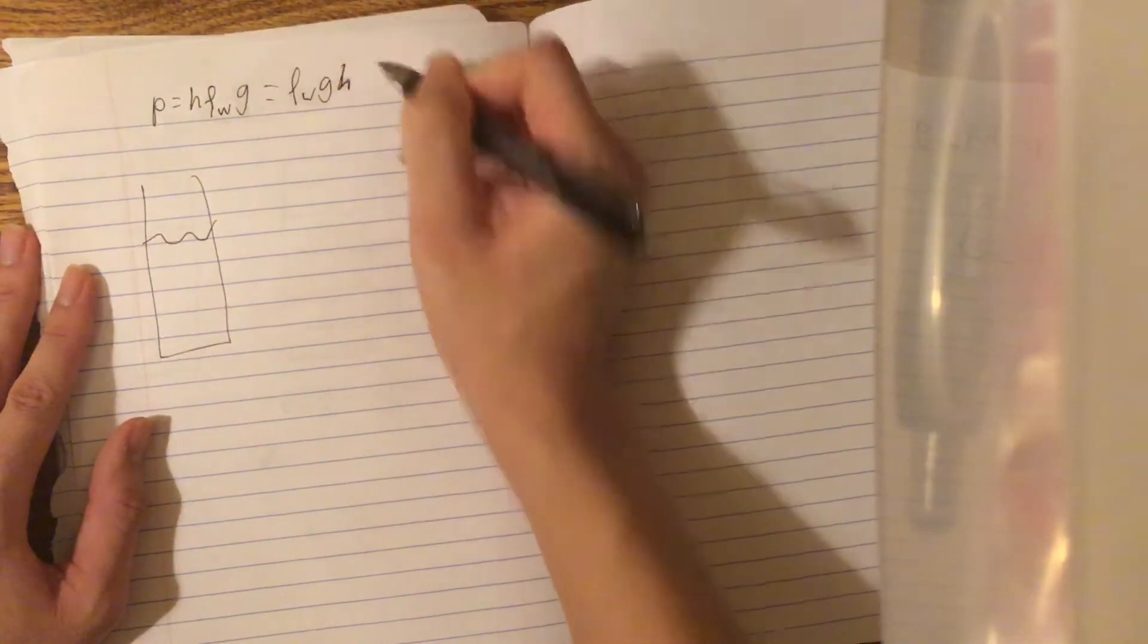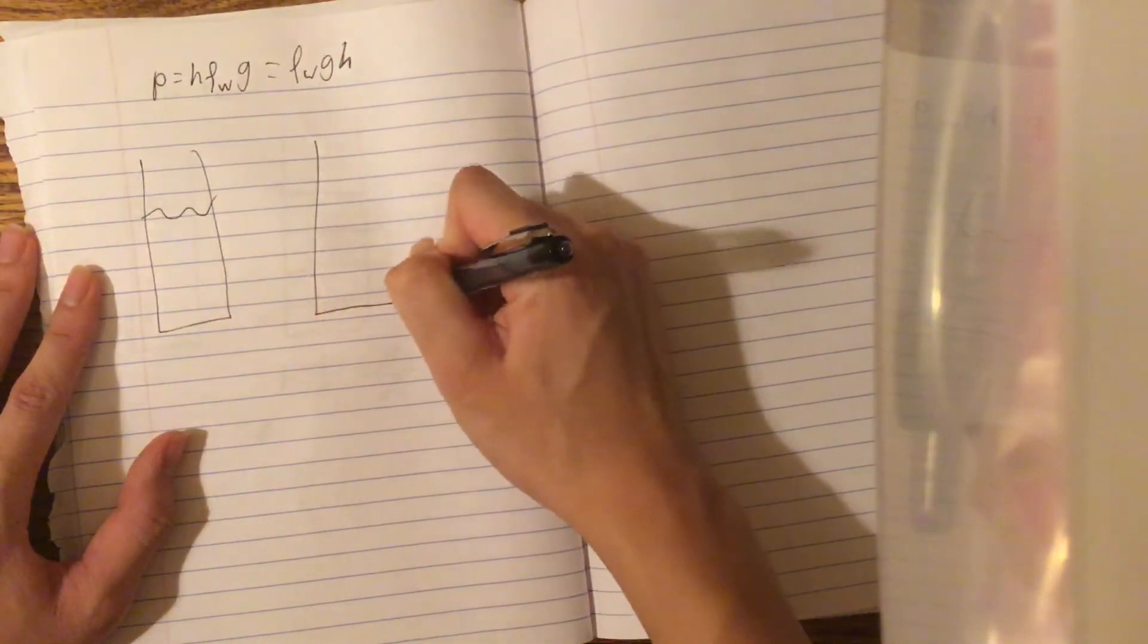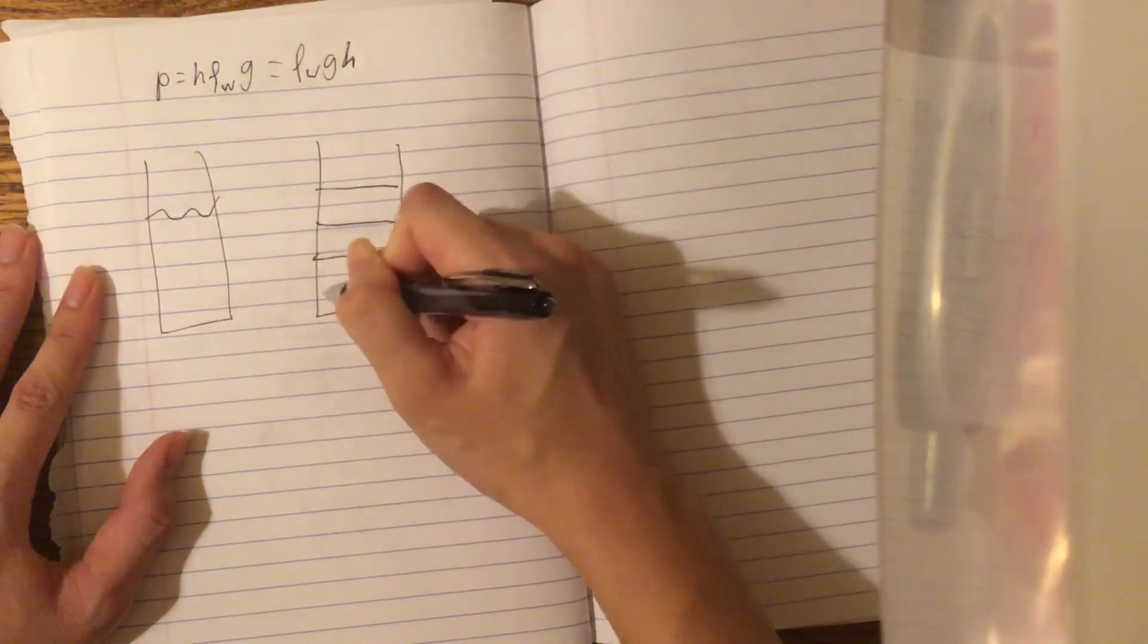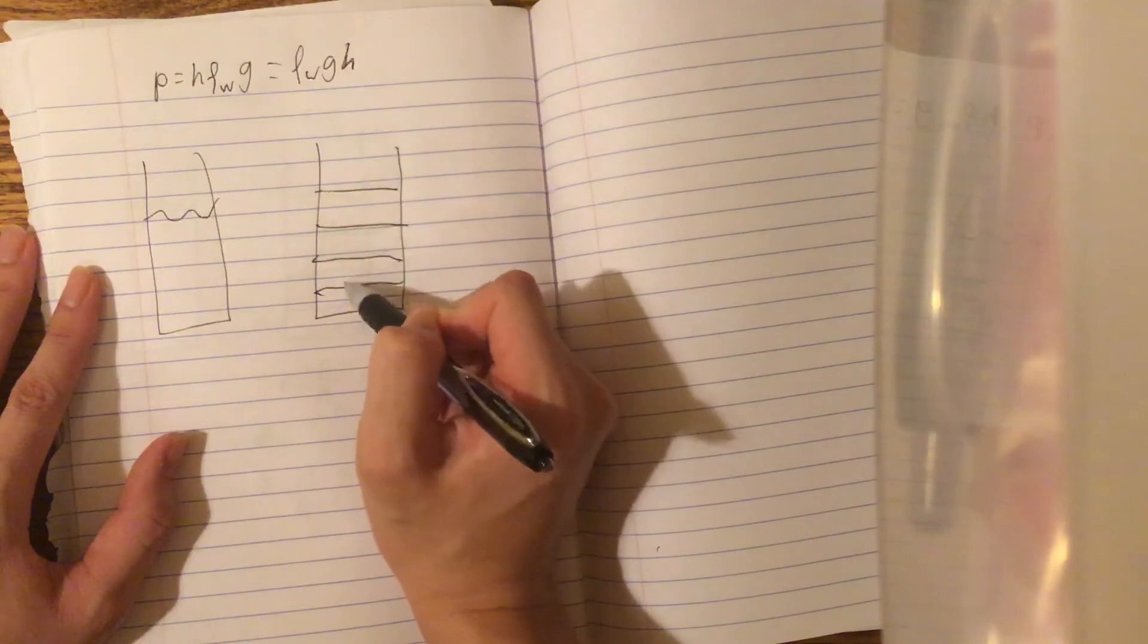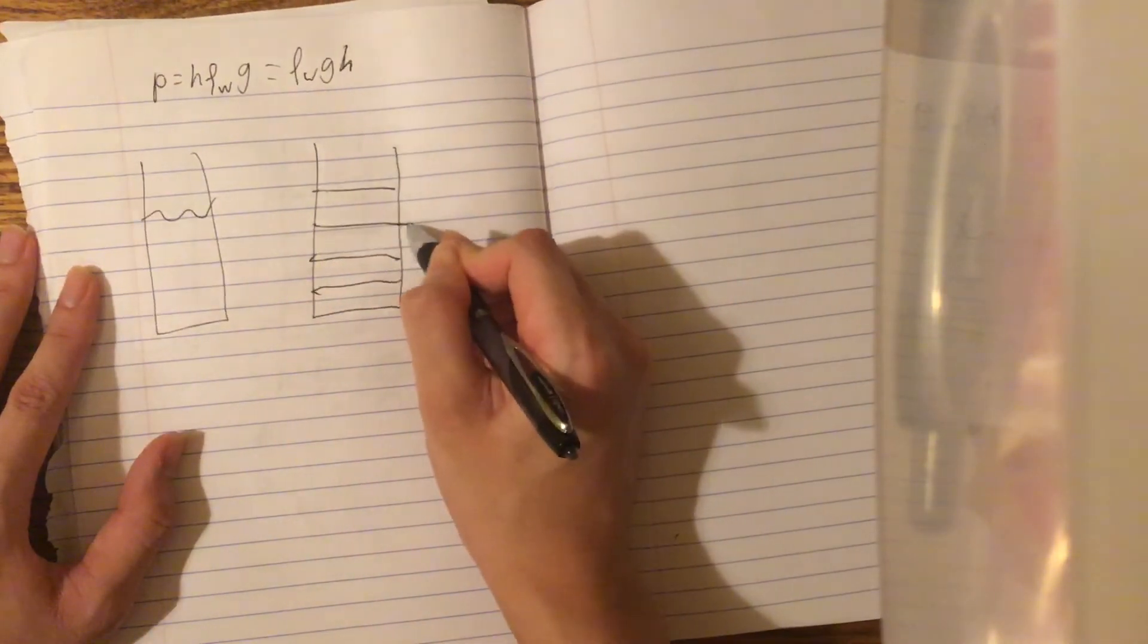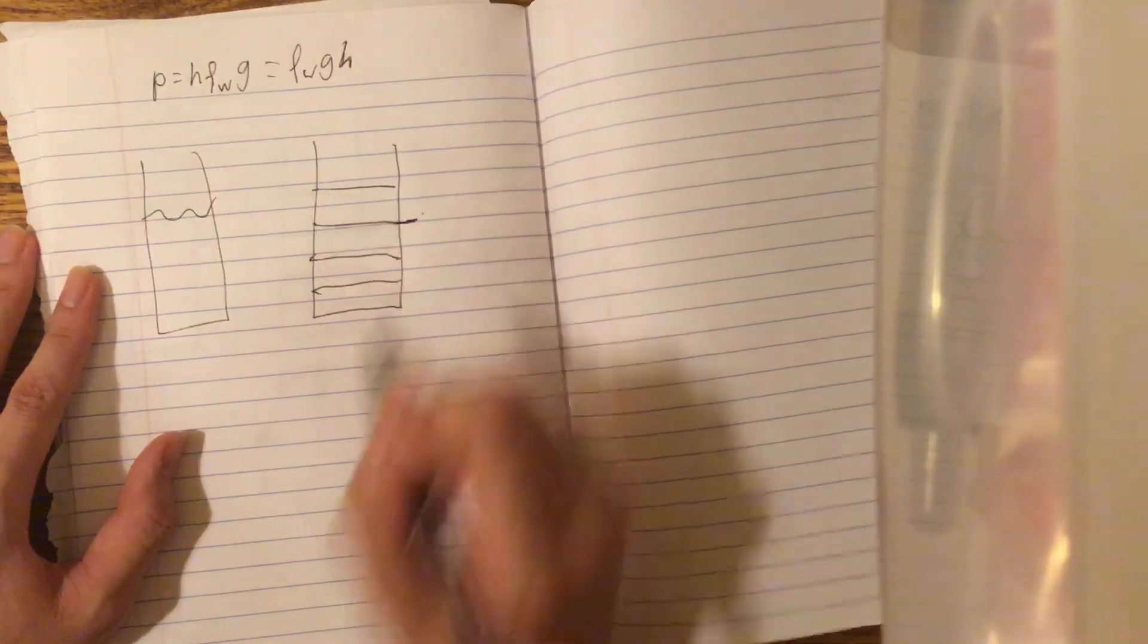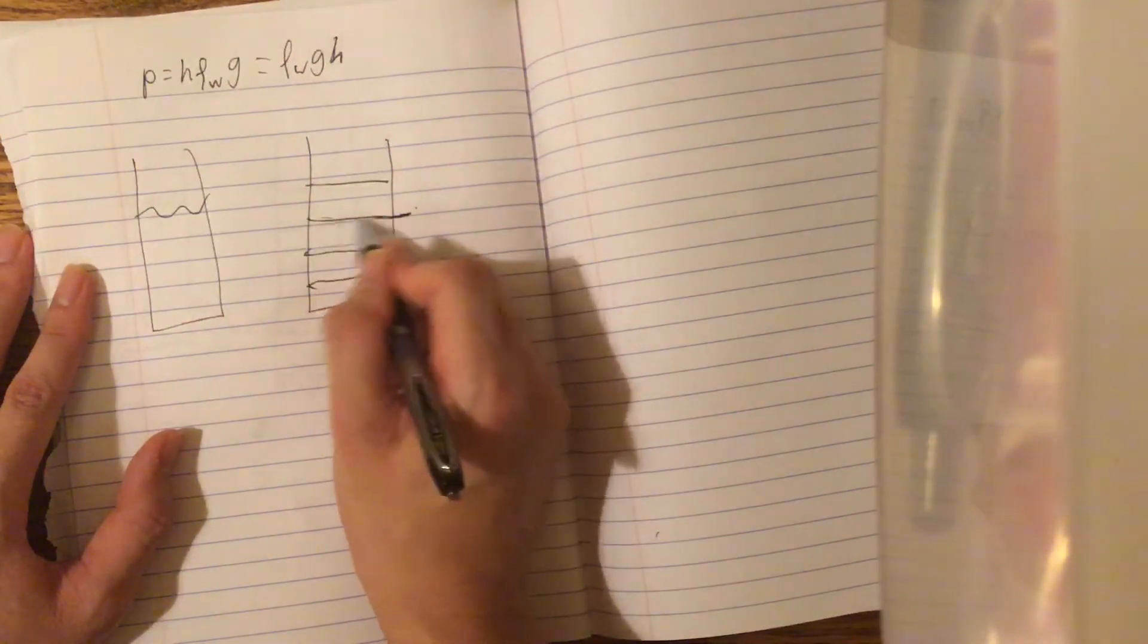So let's prove this formula. First of all, we can think of water as being composed of many blocks. Let's say we freeze this water in here and it becomes many blocks. Then what would the pressure be, let's say here? What would this pressure be? What would the pressure here be?